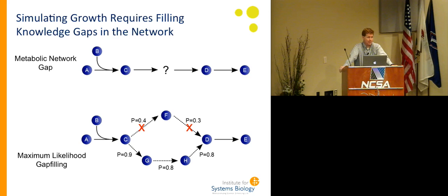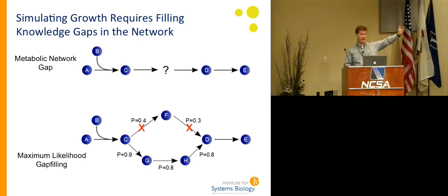One tool that we have developed — developed actually by Matt Benedict during his time in my lab here at the University of Illinois — is maximum likelihood gap filling. In essence, if we know based on physiology that a metabolic network must make some product — an obvious example: you see alanine in the protein and yet your metabolic network doesn't explain how to make alanine — you know for a fact that the organism makes it because it's not eating it and it's sitting there in the protein, so you end up with questions about how to actually fill that gap.